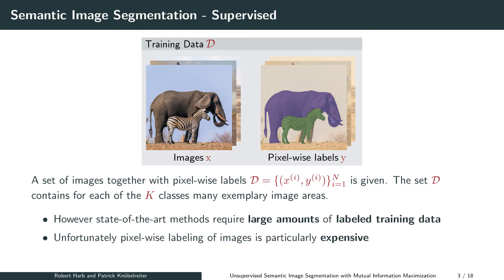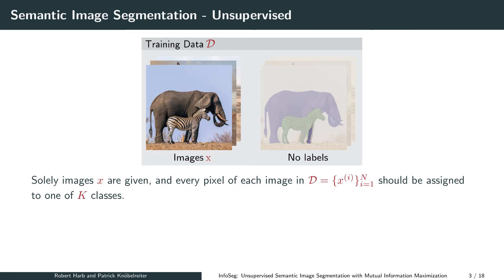Unfortunately, supervised approaches require large amounts of labeled training data, and pixel-wise labeling of images is expensive. For example, annotating a single image of the Cityscapes dataset required 90 minutes of human labor on average. To avoid these expensive annotation requirements of supervised methods, we tackle unsupervised semantic image segmentation in InfoSec.